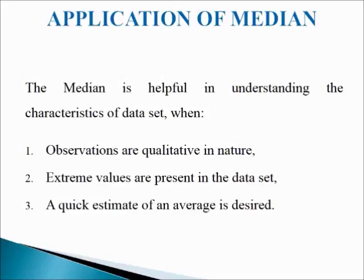Next point, extreme values are present in the data set: when the extreme values are present, median is effective in calculating the value. For example, the median of 10, 20, 30, 40 and 150 would be 30, whereas the mean will be 50. So median in such cases is a better average.